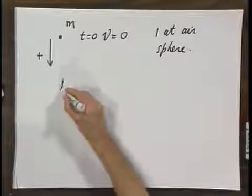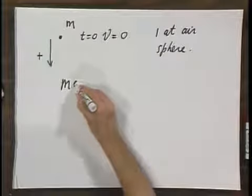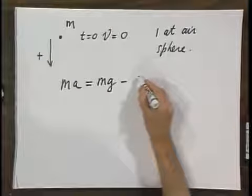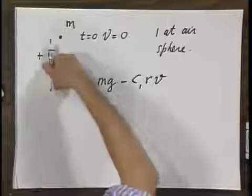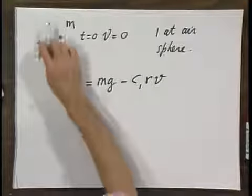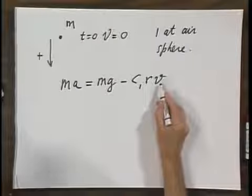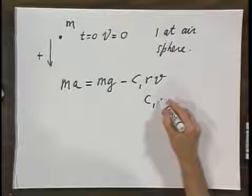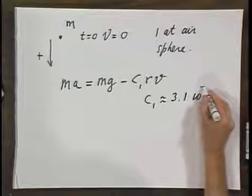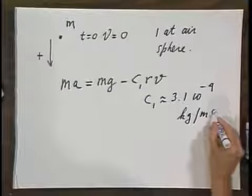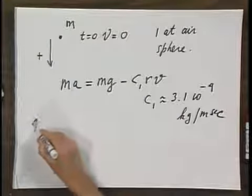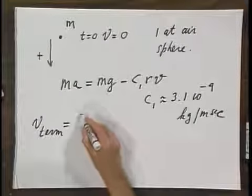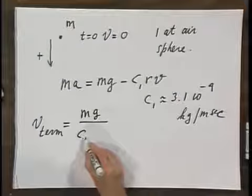I can use the equations we discussed earlier for a spherical object. The force on that object — f equals ma — is the gravitational force in this direction minus c1r times v. When the object has speed v in this direction, it experiences a resistive force in the opposite direction, which in this case is proportional to the speed. C1 at one atmosphere air is approximately 3.1 times 10 to the minus 4 kilograms per meter per second. The terminal velocity is when a becomes zero, so terminal velocity equals mg divided by c1r.